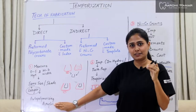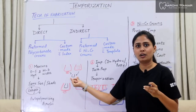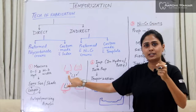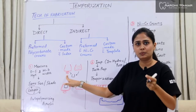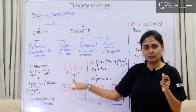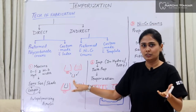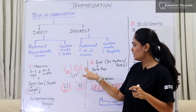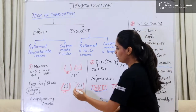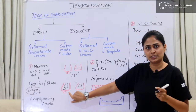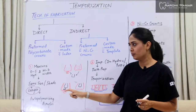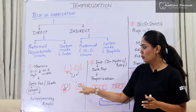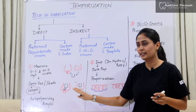We pour autopolymerizing acrylic resin into the polycarbonate crown and then place the whole unit over the prepared tooth. As shown in the diagram, the polycarbonate crown template has a tab to hold it in place. The prepared central incisor is slightly smaller. We fill the template with autopolymerizing resin, cover the prepared tooth with it, and when we remove the polycarbonate crown, we have a temporary crown of autopolymerizing resin over the prepared tooth. This is the first direct method, occurring entirely in the patient's mouth.